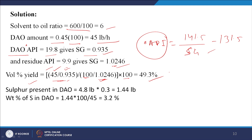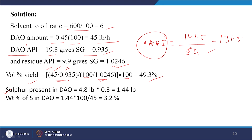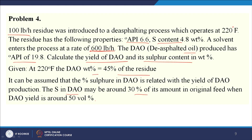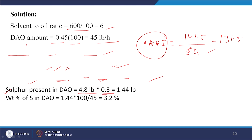Since DAO yield ≈ 50%, sulfur in DAO = 30% of original sulfur. Original sulfur = 4.8 pound per 100 pound feed. Sulfur transferred to DAO = 4.8 × 0.3 = 1.44 pound. Sulfur weight percent in DAO = 1.44/45 × 100 = 3.2%. This completes the calculation.